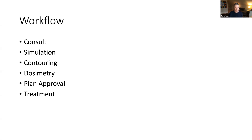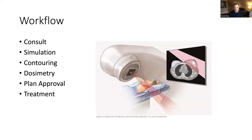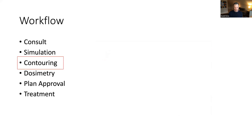After contouring, we work with a specialist called a dosimetrist who plans the radiation beams. Through a software program, we apply virtual radiation beams with specified energy to distribute a dose of radiation according to our prescription, using all the targets we drew as well as the organs at risk we identified. We settle on a plan that the physicians approve, then the patient comes back, lays on the table, and the linear accelerator delivers that pre-specified plan.